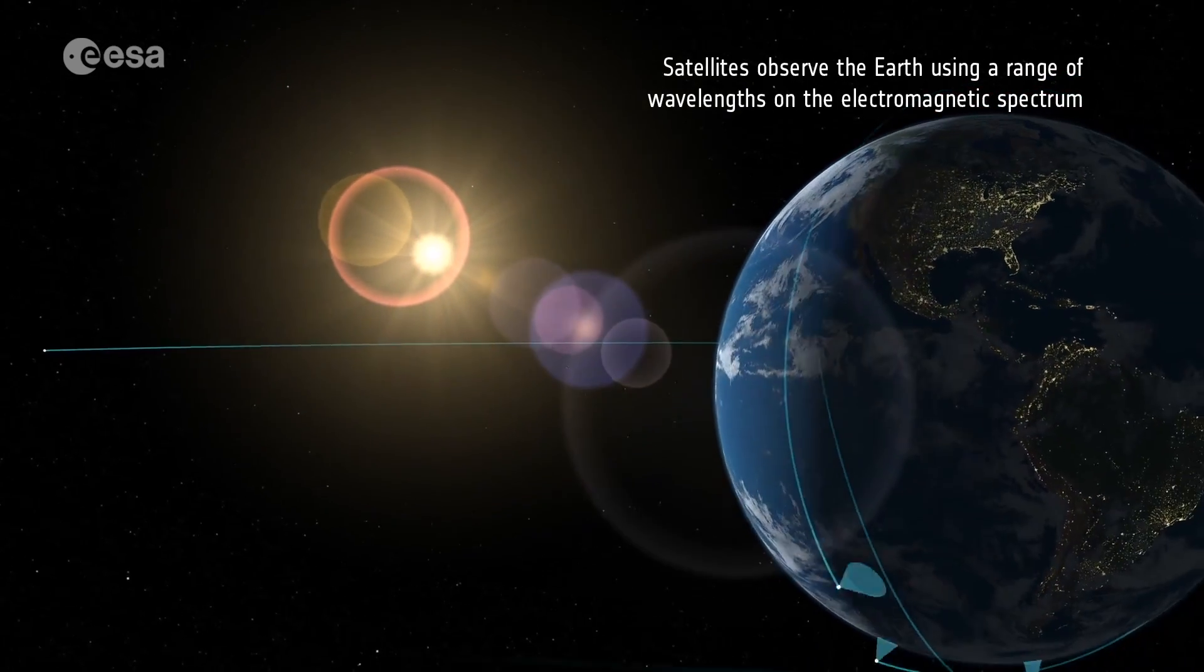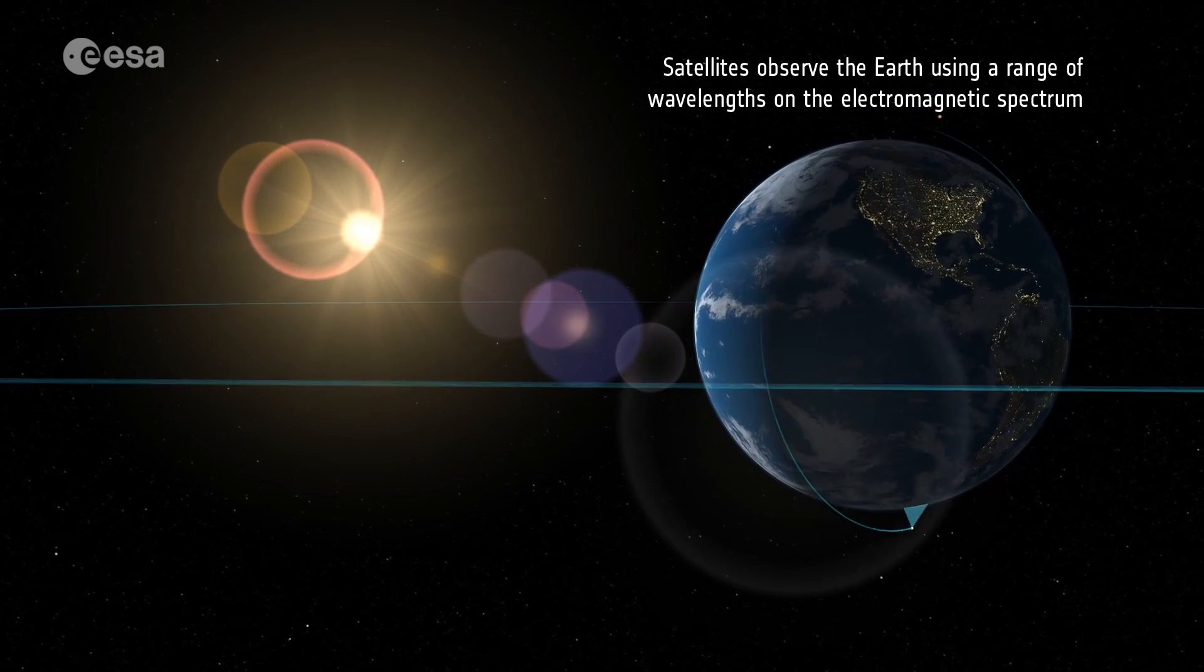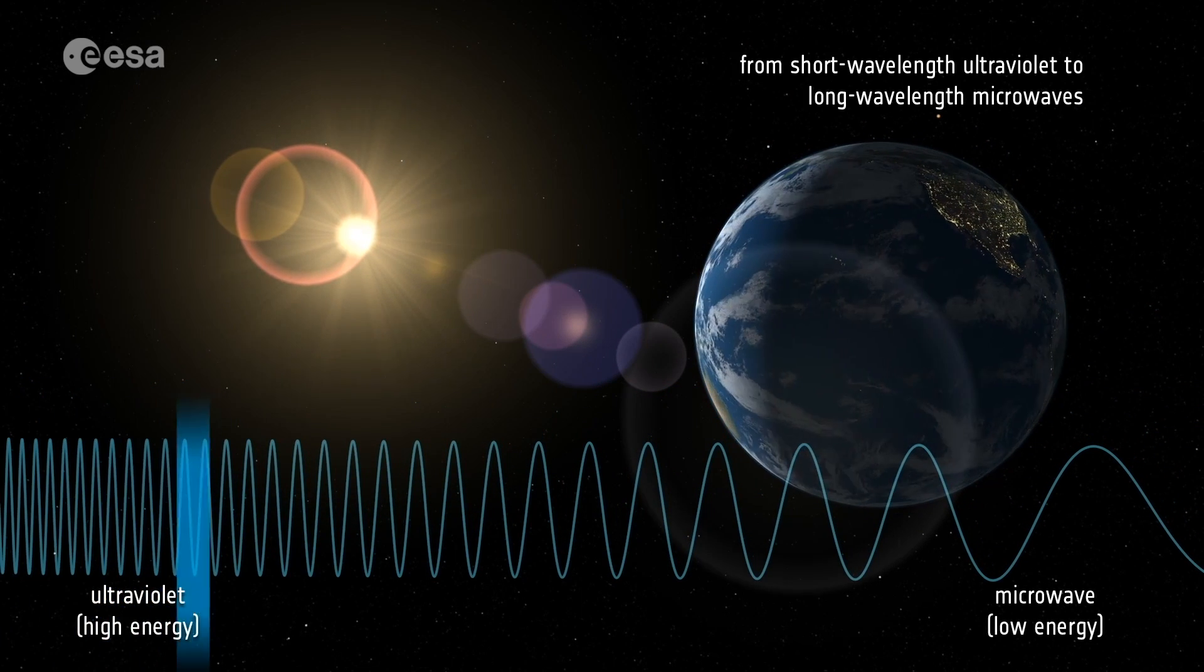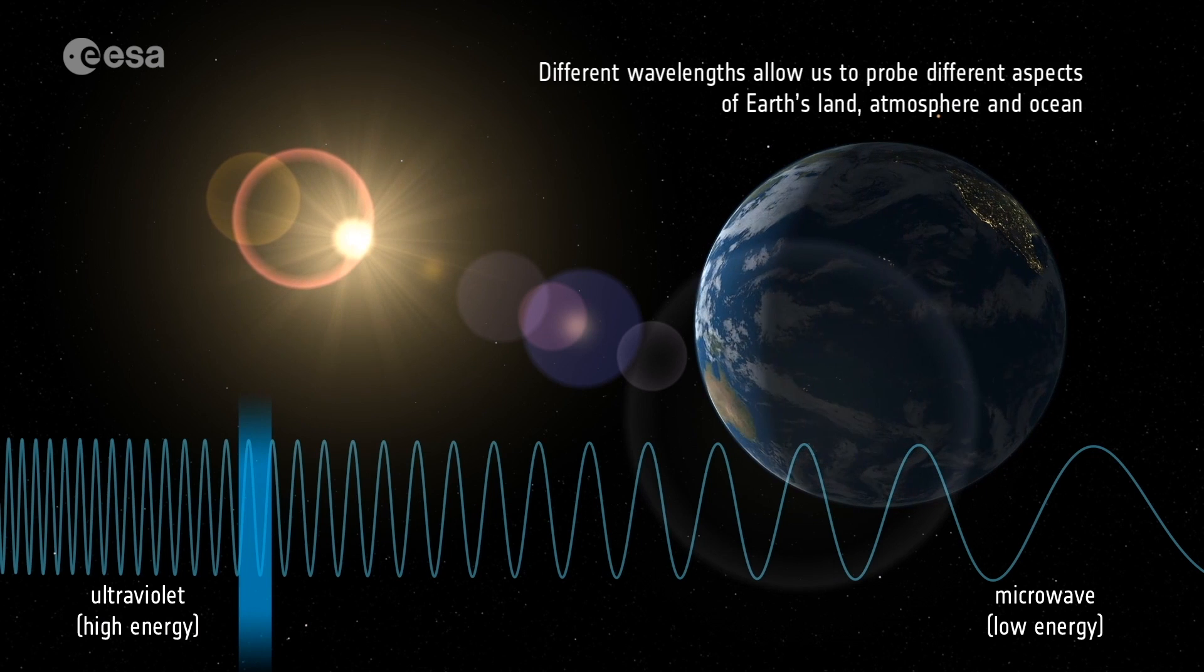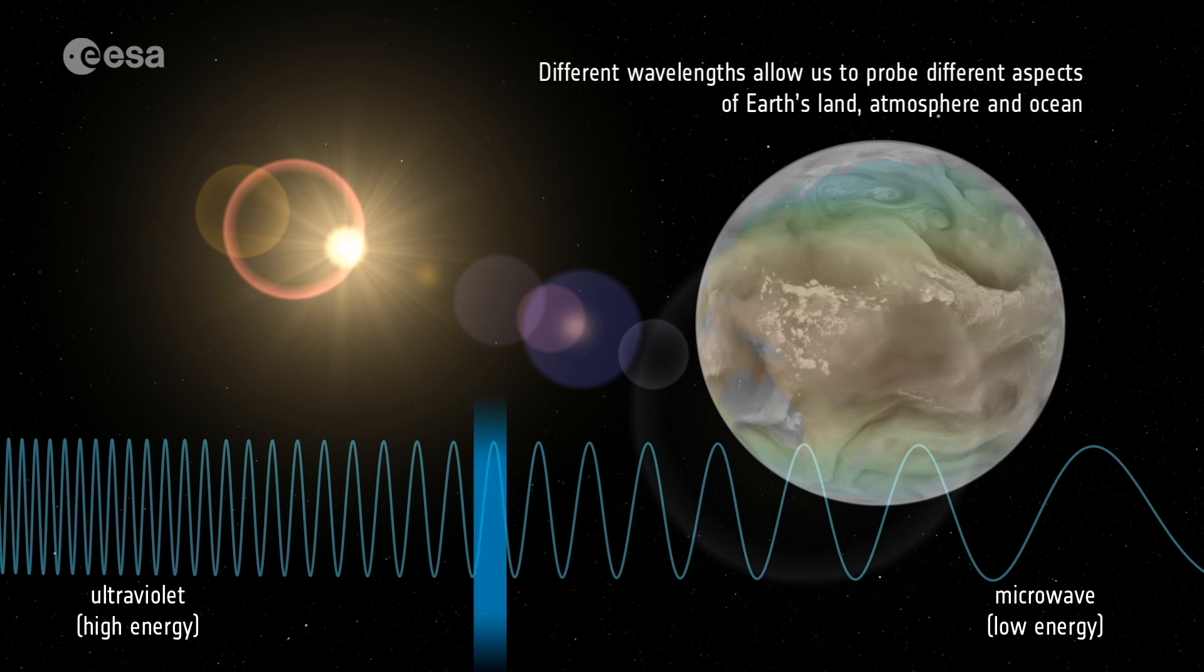Satellites observe the Earth using a range of wavelengths on the electromagnetic spectrum, from short wavelength ultraviolet to long wavelength microwaves. Different wavelengths allow us to probe different aspects of Earth's land, atmosphere and ocean.